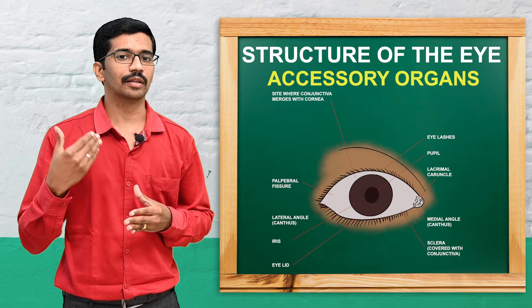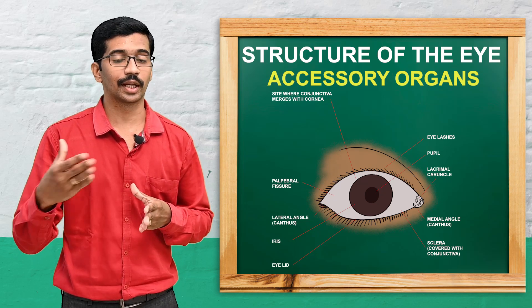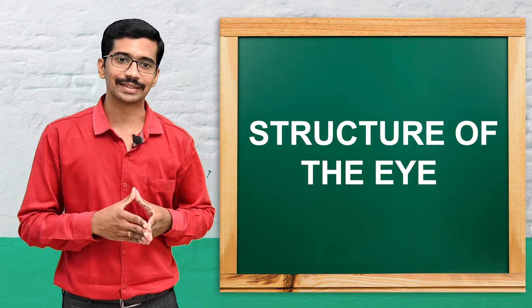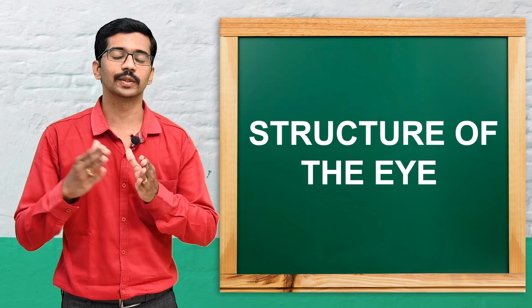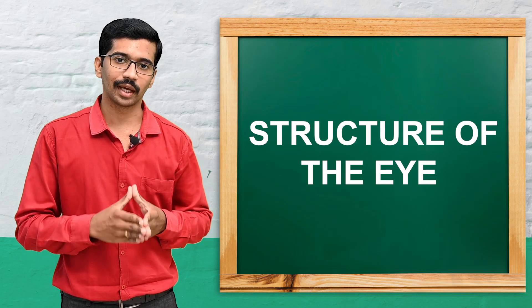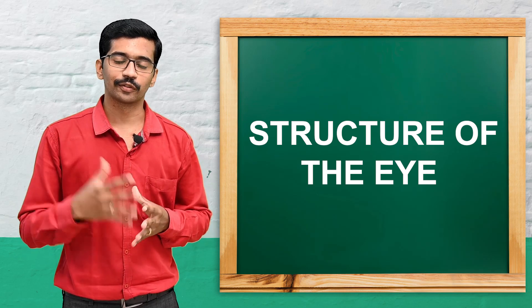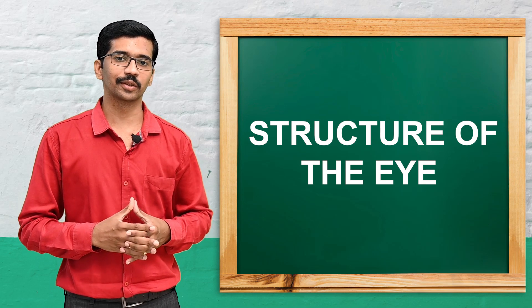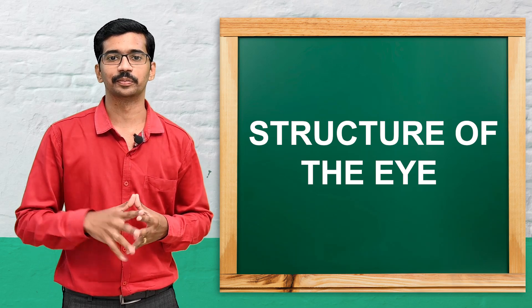These are the various gross structures and gross anatomy of the eye. Today we have seen what the eye is and the gross anatomy of the eye. That is all for today's class. This is Vishan signing off — till we meet in the next class. Thank you.